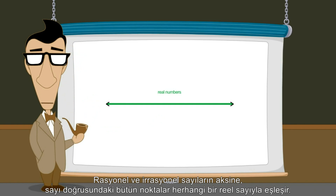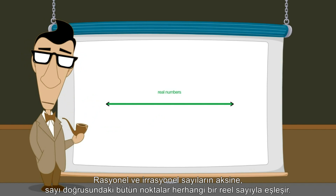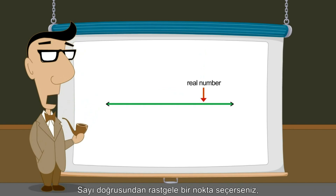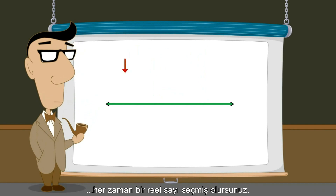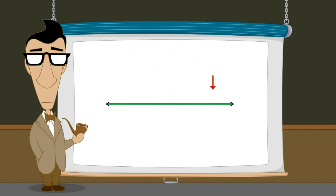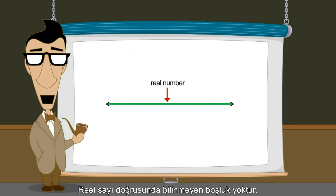Unlike the rational and irrational numbers, every point on the number line corresponds to some real number. If you randomly pick a point on the number line, it will always correspond to a real number. There are no gaps in the real number line.